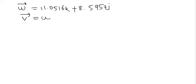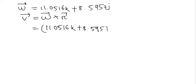So we will put the value 11.0516k plus 8.5957j multiplied by 26i plus 36j minus 28k. Now calculating this cross product...